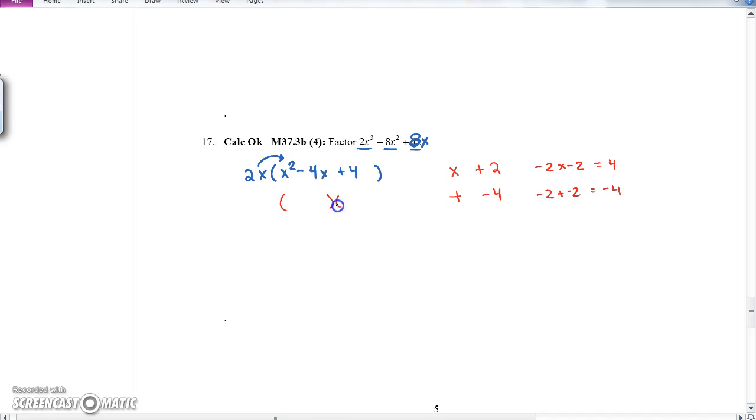So those must be my interior factors, x minus 2 and x minus 2. We still have the 2x. That's our complete factorization. We could have also written it like this.